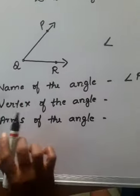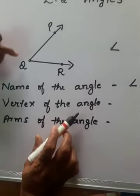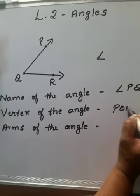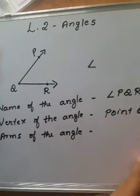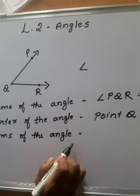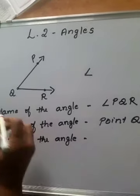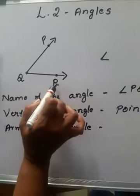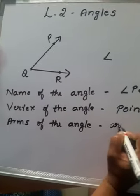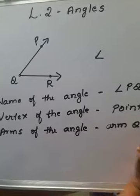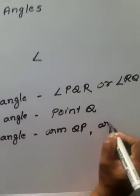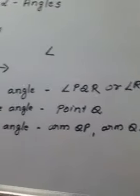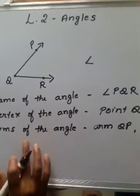Which is the vertex of this angle? Point Q. And the arms of this angle are ray QP and ray QR.